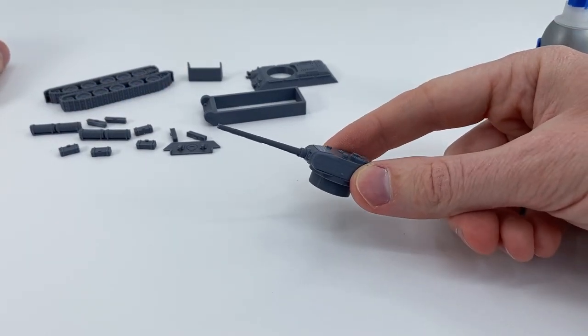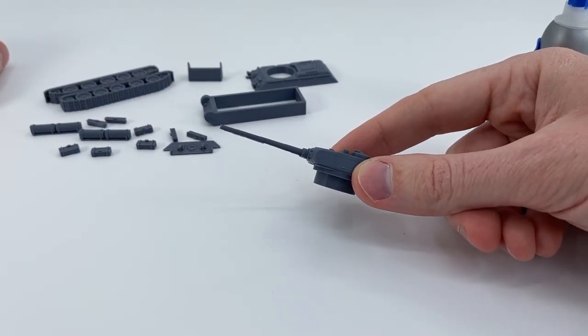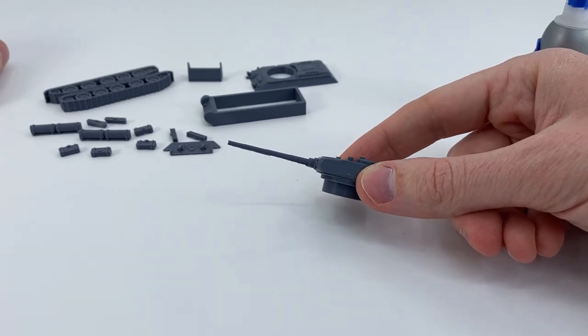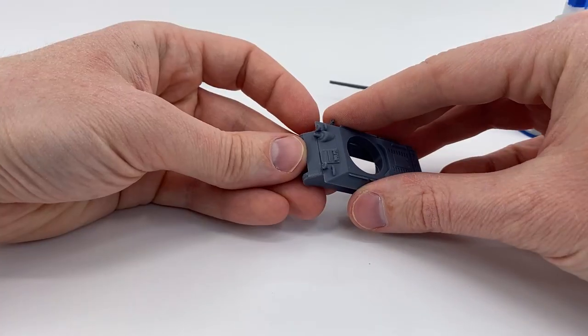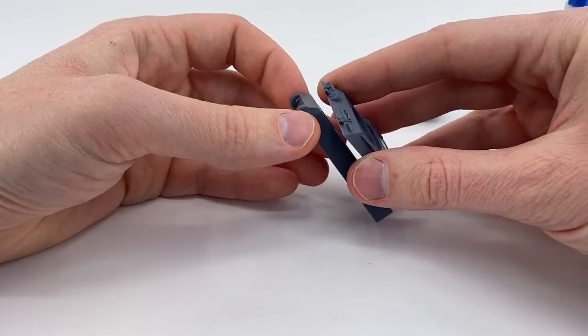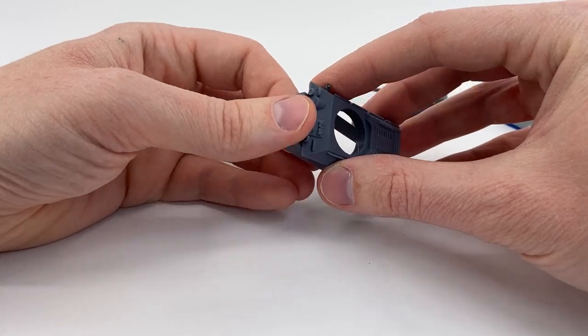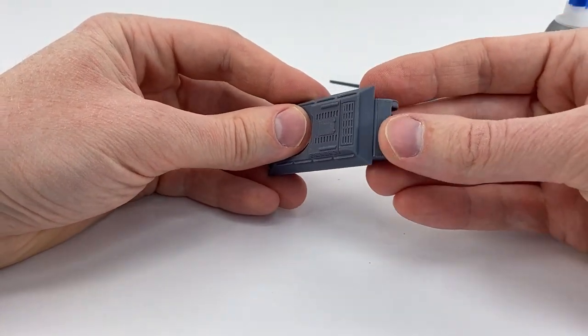All right so there's the turret. And this is the same way as T-34-85 or T-34-76. Either one will do the same process. So it's not going to go like this. It's going to go like this as you can see.